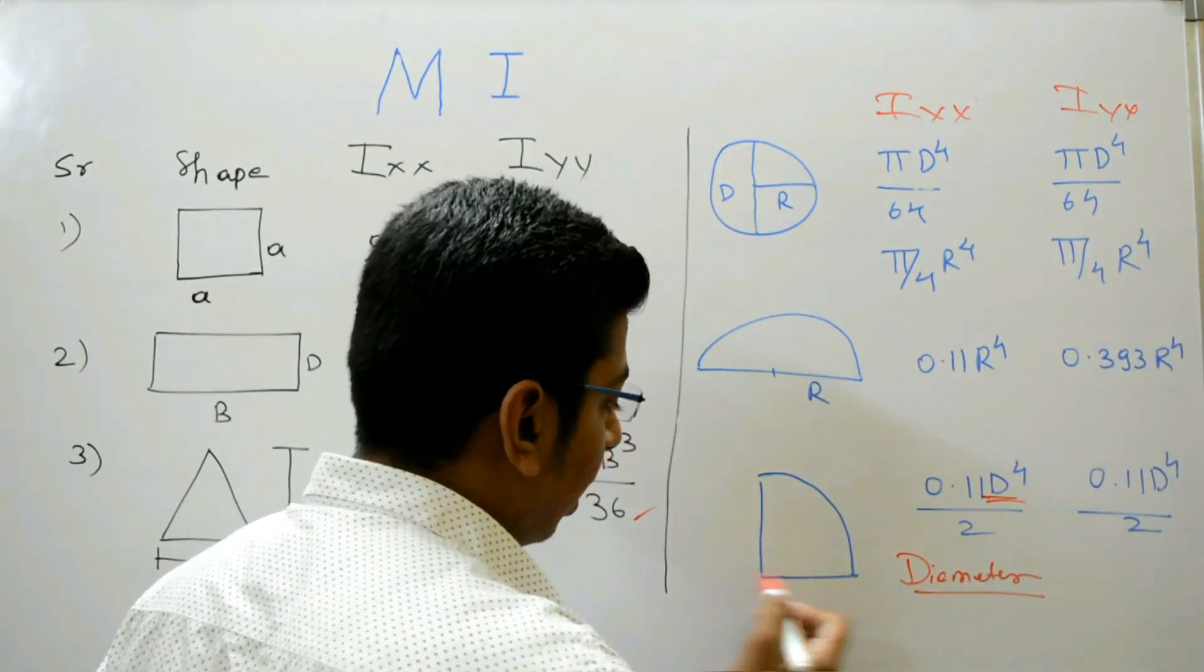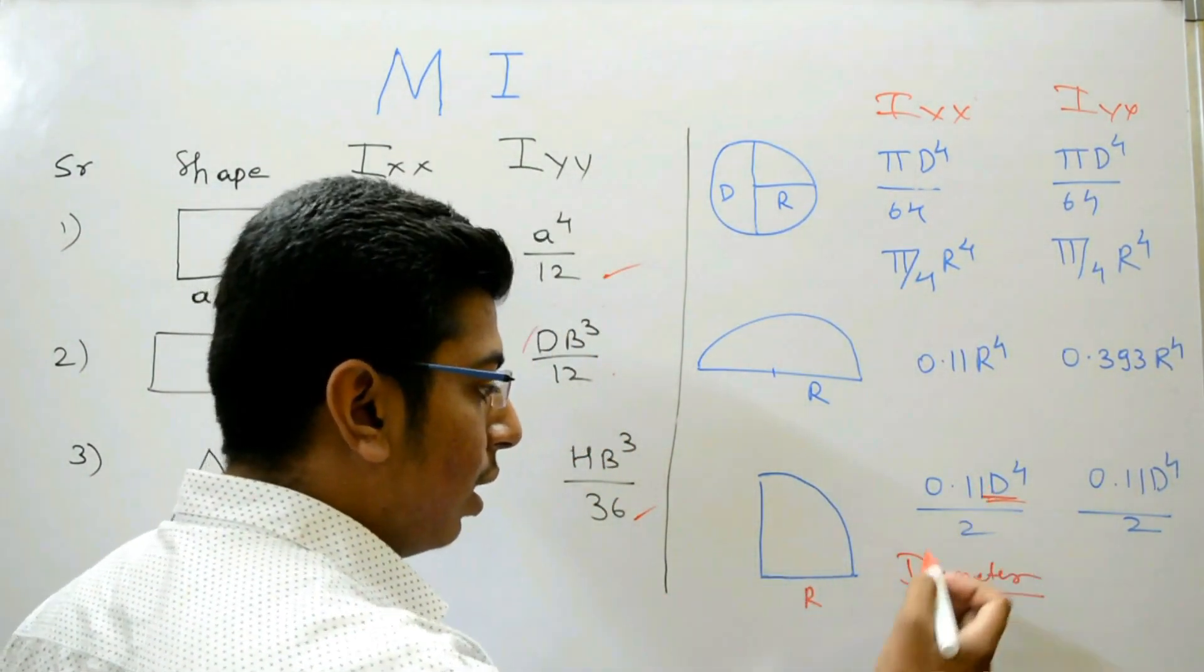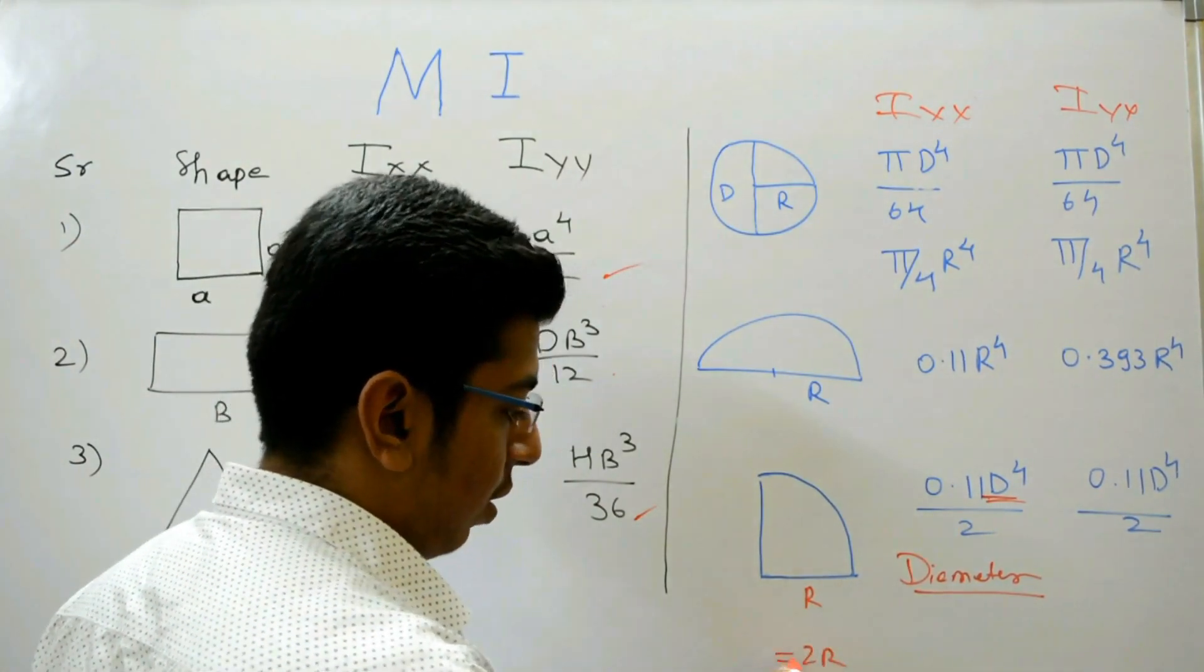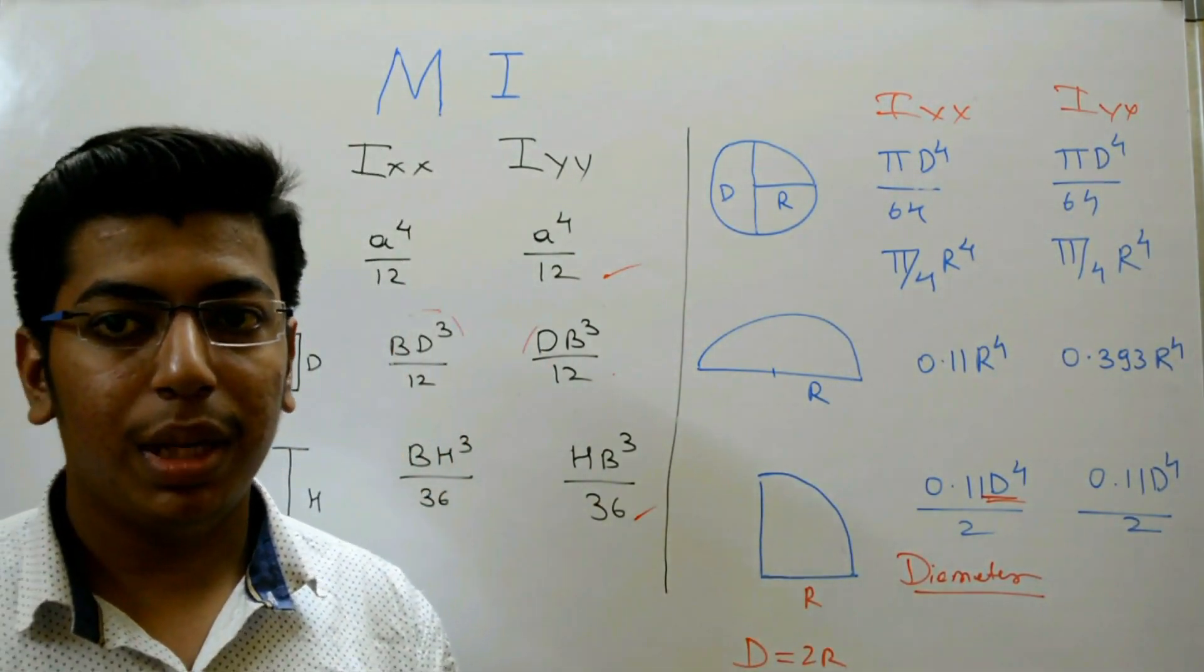Diameter of that quarter circle, this is R, then D will be 2R. D will be 2R.